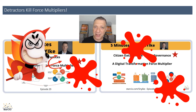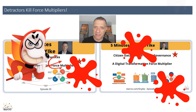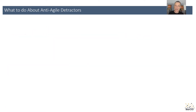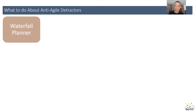In this episode I'm going to talk about a specific detractor that I call the anti-agilist. There are many different types of personas and behaviors, but for this episode I'm going to boil it down to three.